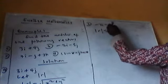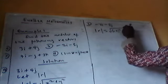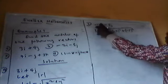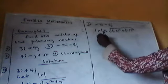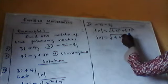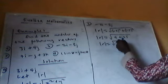Now let's go to the second one. Example B: R equals minus 2I minus 5J. To find the modulus of minus 2I minus 5J: modulus of R equals the square root of (-2) squared plus (-5) squared, which is the square root of 4 plus 25, equals the square root of 29.